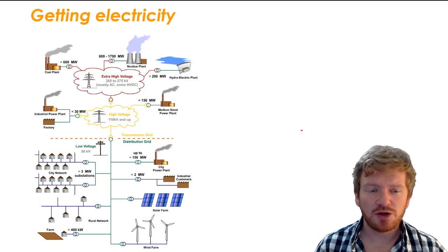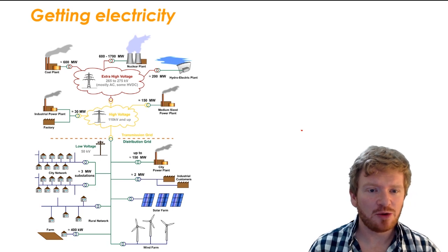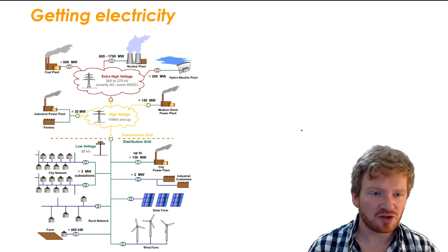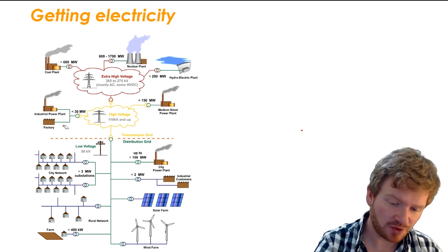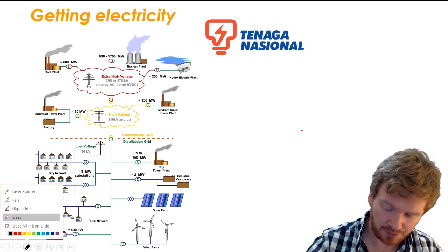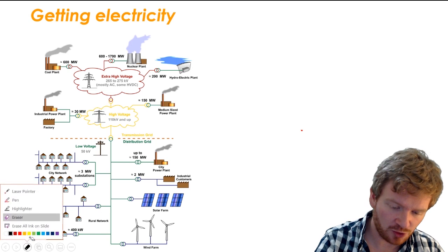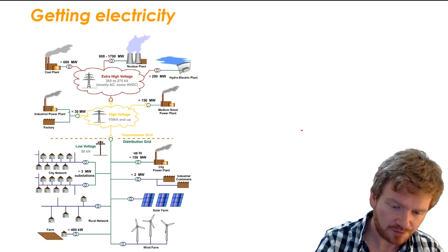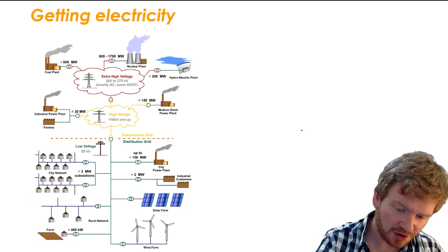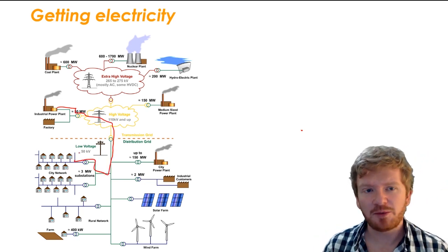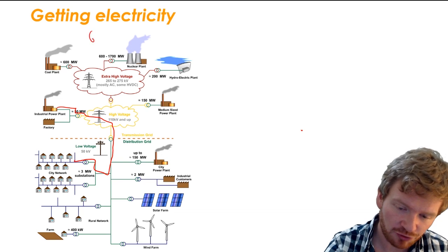You may have thought in the past about how electricity gets from a power station, where it's being generated, into your house. It's this path from the power station all the way to your home, and we do that with something called a grid.